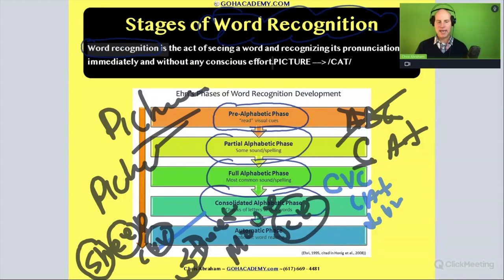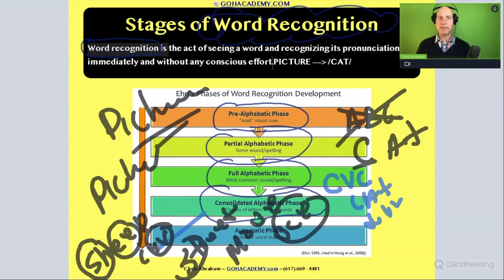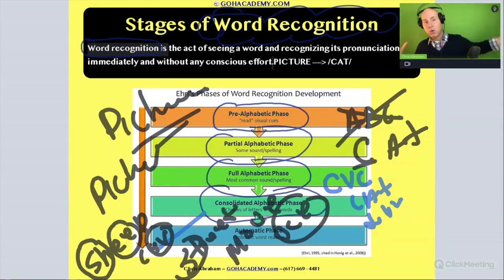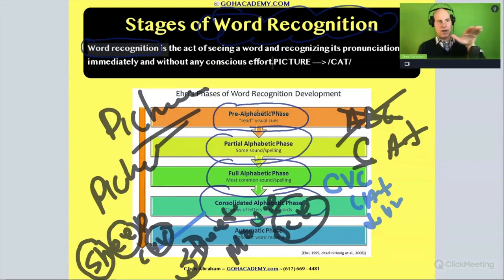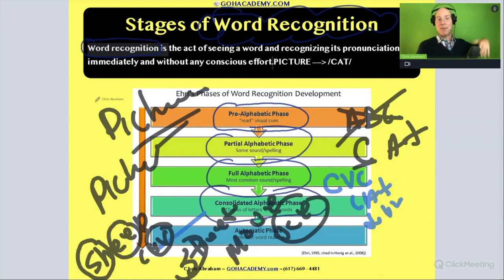After that stage is the automatic phase — they have automaticity. When they come across a word like 'sheep,' 'car,' 'street,' or 'move,' they don't need to use phonics anymore; they recognize it with no effort. At this automatic phase, they're at the word recognition stage where they can see a word and immediately recognize its pronunciation — unconsciously.